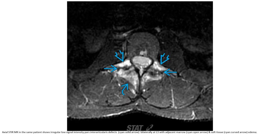This is a T2 fat-saturated MRI in the same patient, showing irregular low signal intensity pars interarticularis defects, bilateral at the L3 level, with adjacent marrow and soft tissue edema.